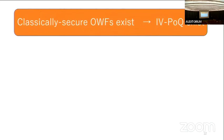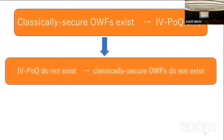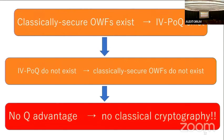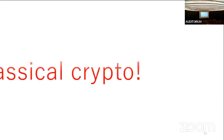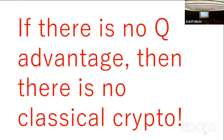Our result has an interesting consequence. What we show is: if a classically secure one-way function exists, then IVPoQ exists. Taking the contrapositive: if IVPoQ does not exist, then classically secure one-way functions do not exist. Since classically secure one-way functions are the minimum assumption in classical cryptography, this means: if there is no quantum advantage, then there is no classical cryptography.